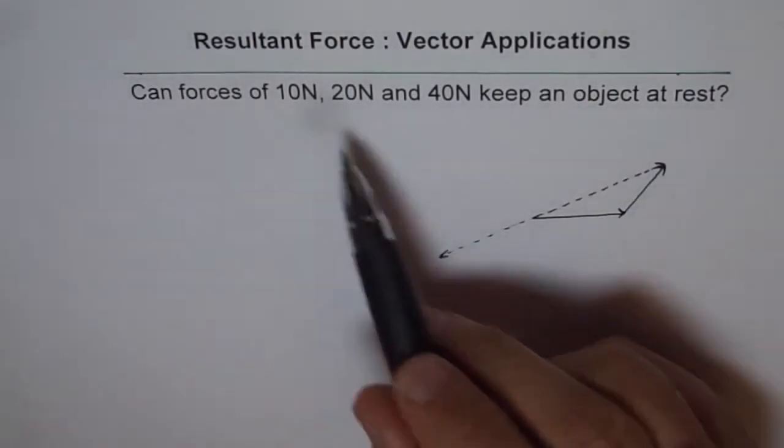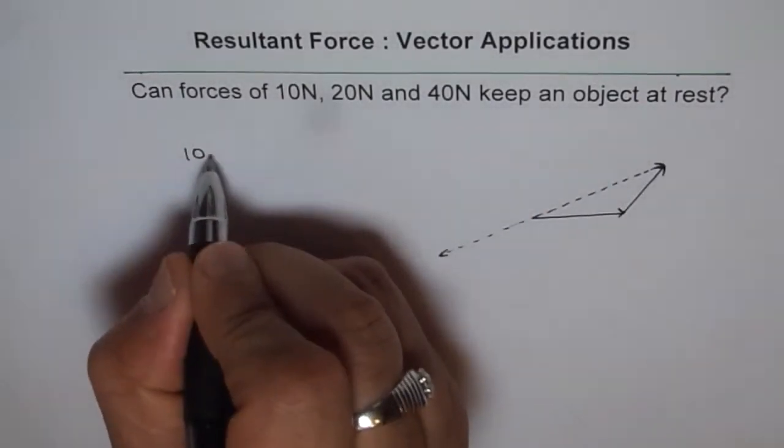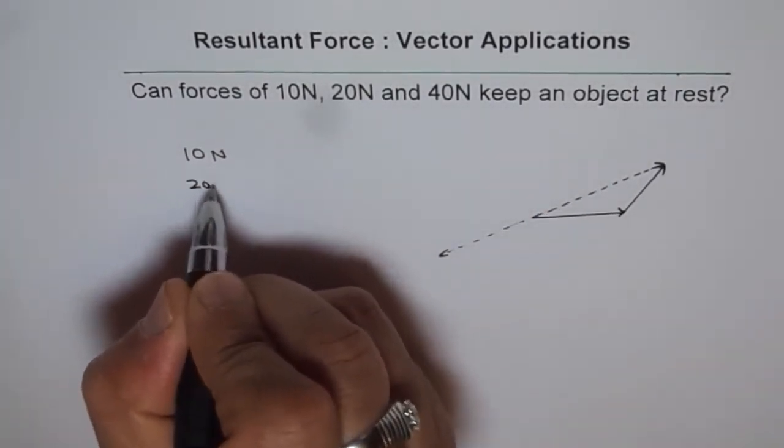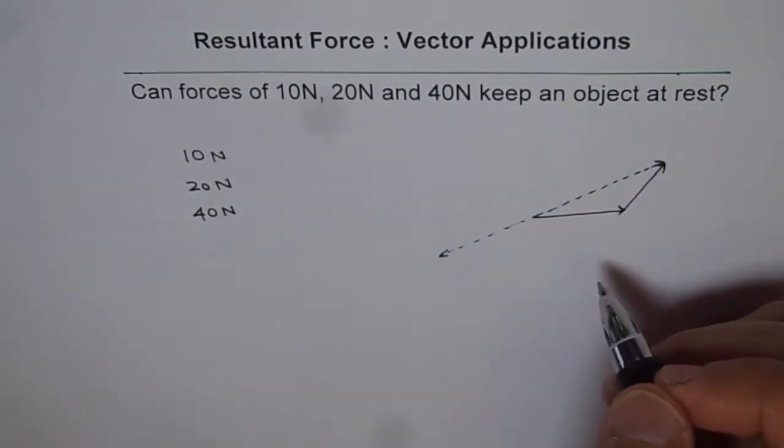So in this case we have got the forces as their magnitude is 10N, 20N and 40N. Can they form a triangle? That is a big question.